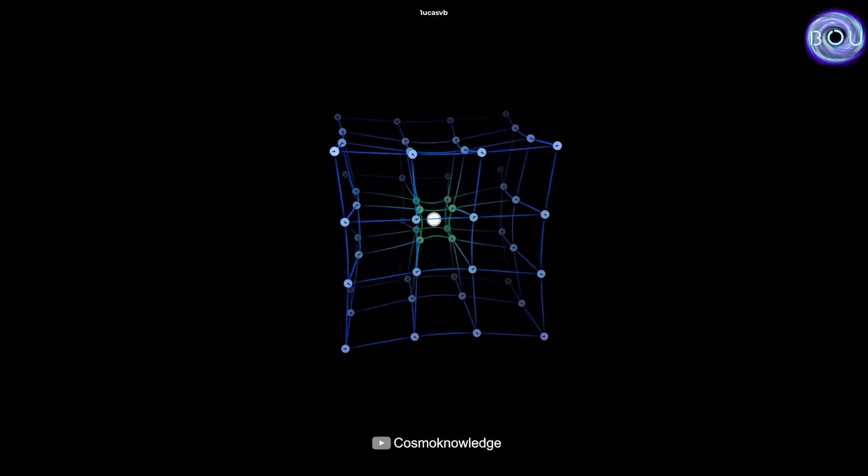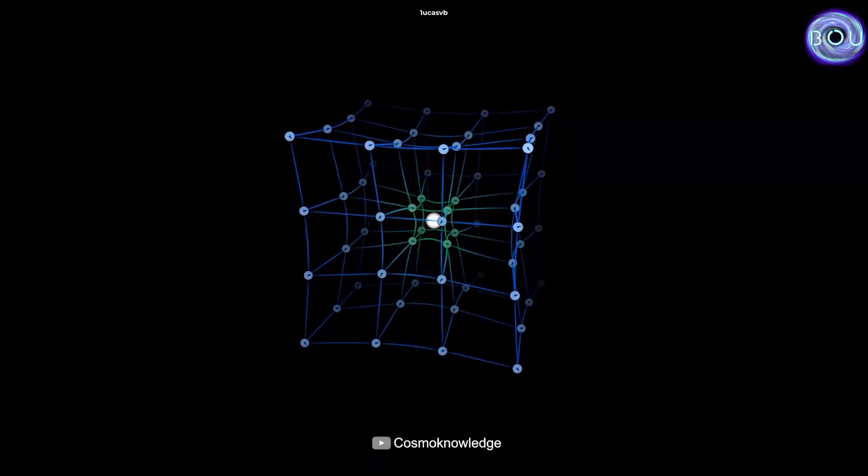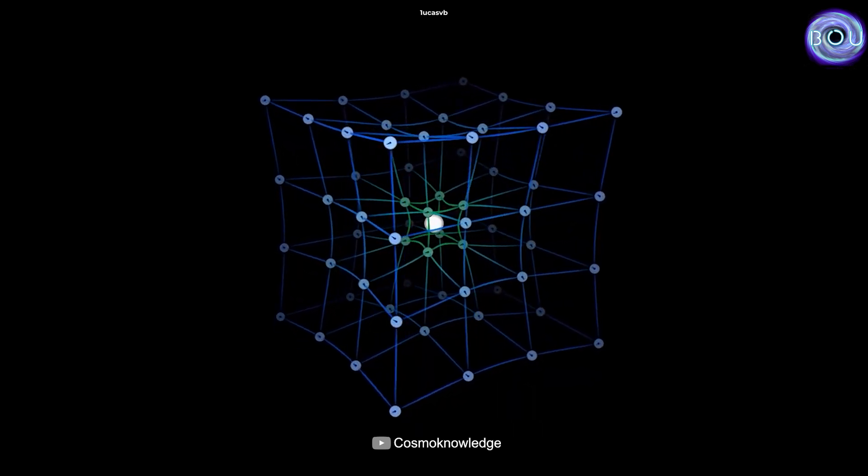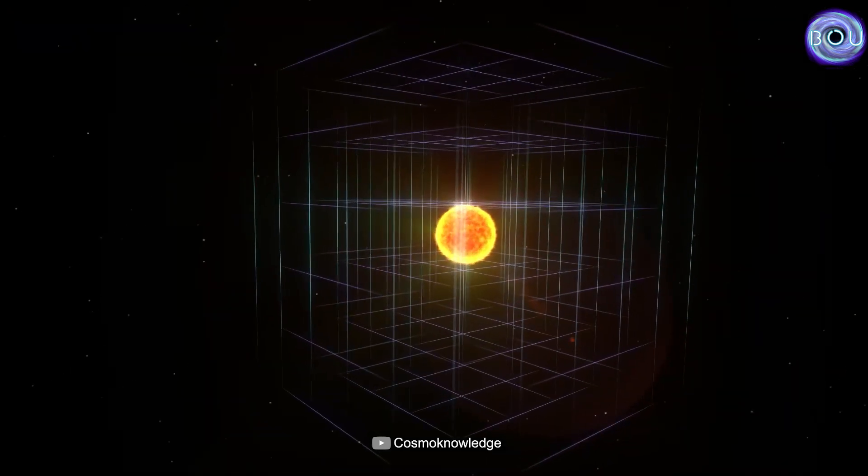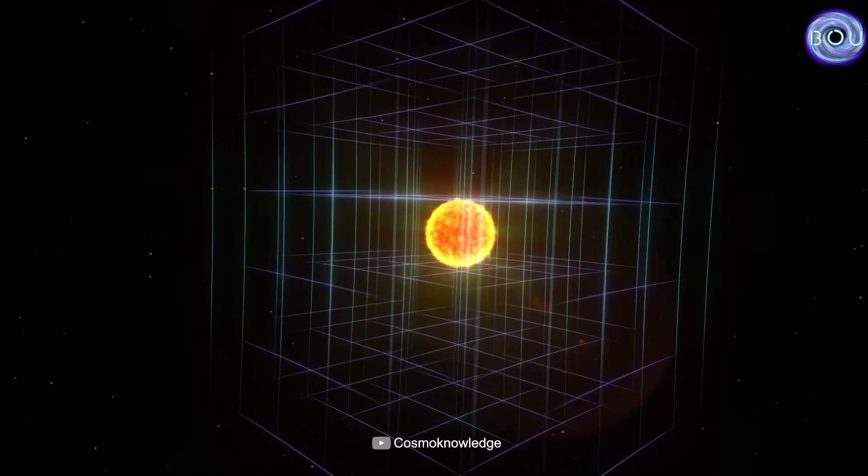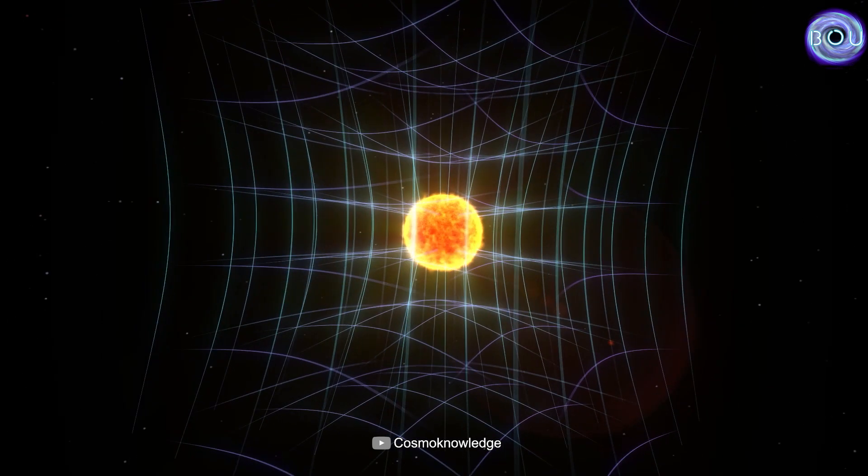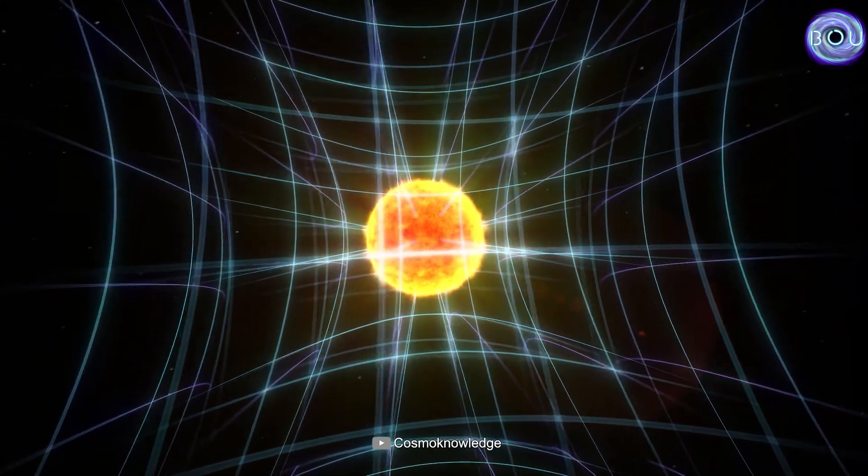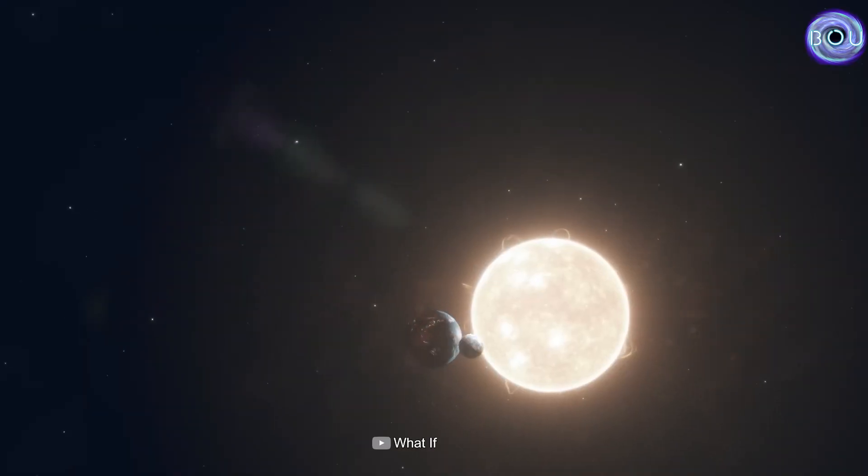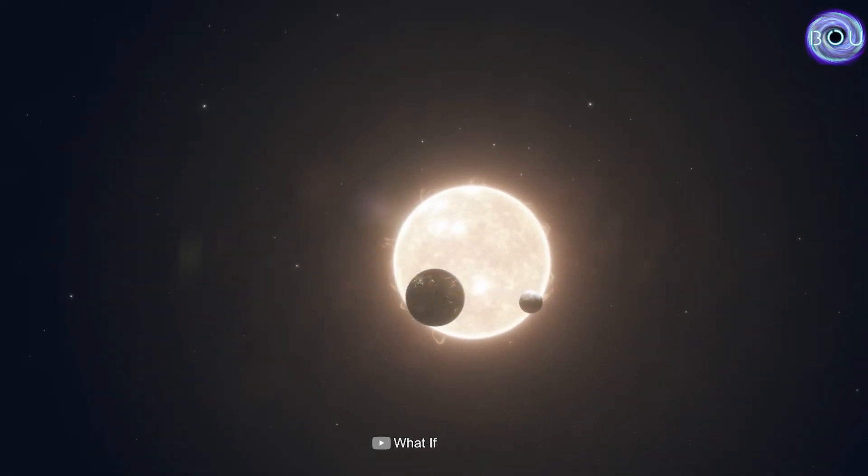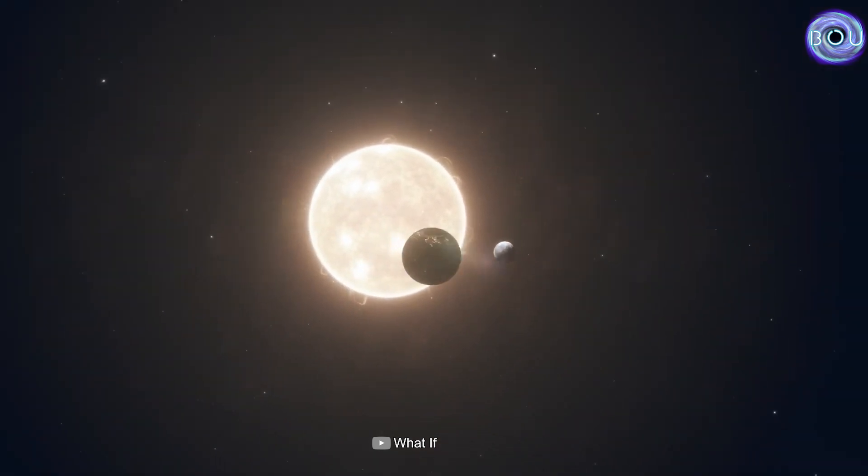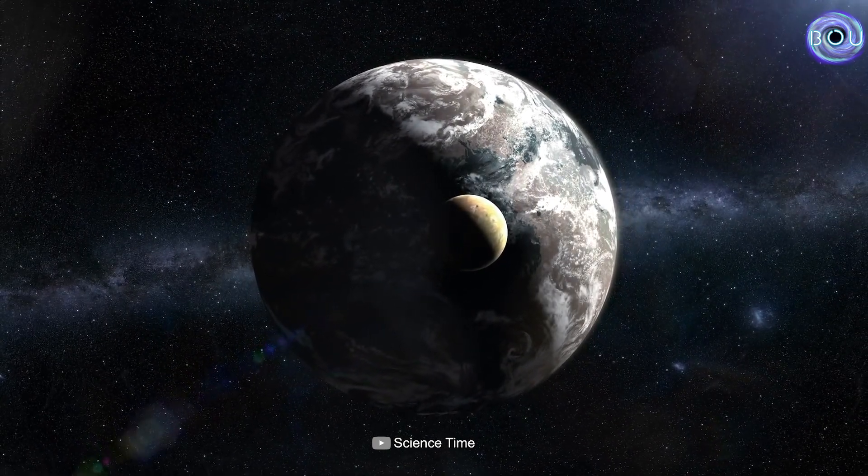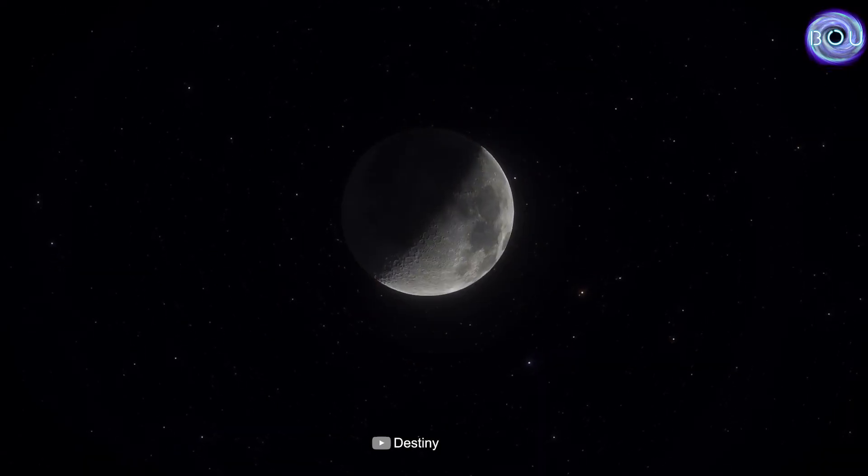Space-time in three dimensions, which is the universe we live in, is a bit more complex and takes on this form. For example, the sun, which is a very massive object, bends space-time and attracts all the planets and celestial bodies in the solar system towards itself. The same example applies to the moon and the earth. Because the earth is much more massive than the moon, the moon has fallen into the earth's gravitational well, causing it to orbit around the earth.